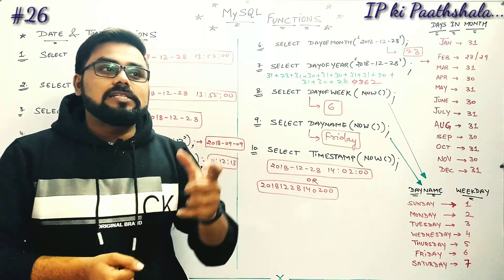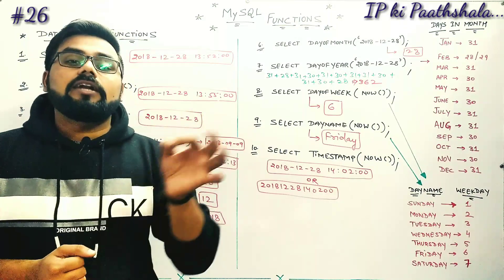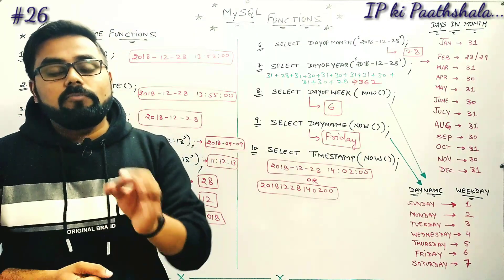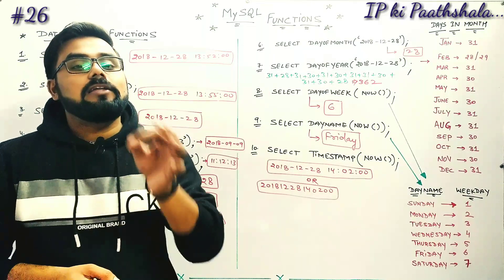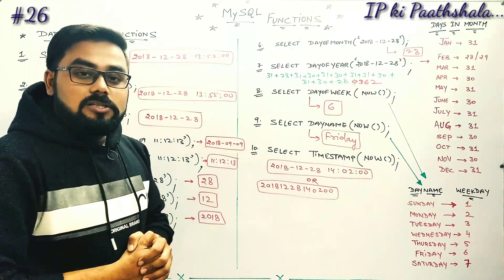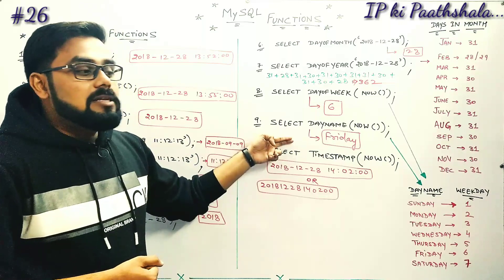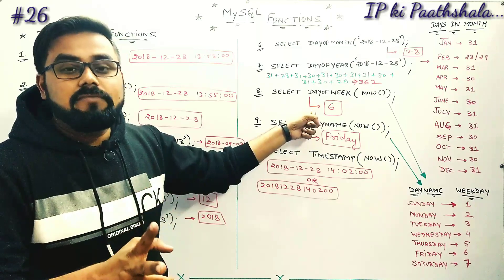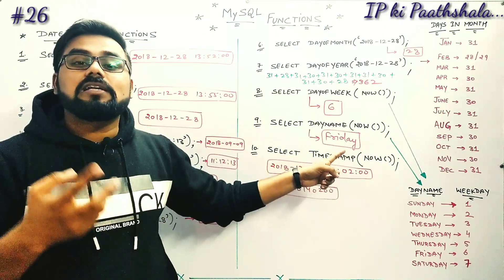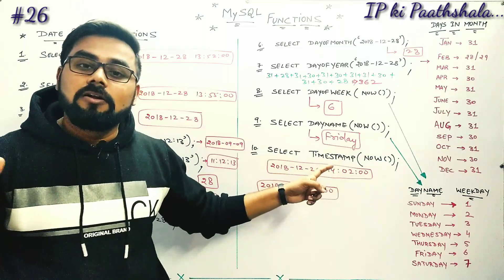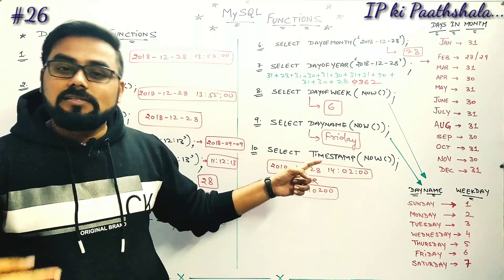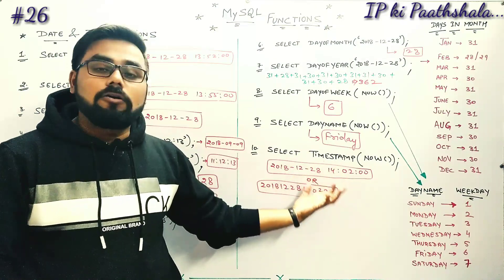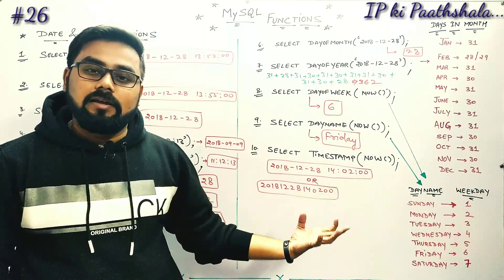Then we studied DAY(), MONTH(), and YEAR() functions — the three sections of any date. First section is year, second section is month, last section is day. DAYOFMONTH() is nearly the same as DAY(). For DAY OF YEAR calculation, the leap year matters — if the year is a leap year, February has 29 days; if not, 28 days. DAYOFWEEK() answer is numeric from 1 to 7, starting from Sunday to Saturday. TIMESTAMP() is a notation — a combination of date and time.